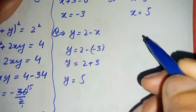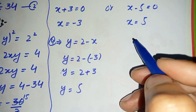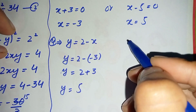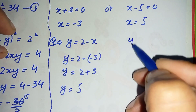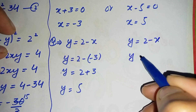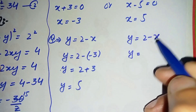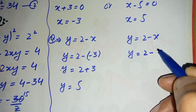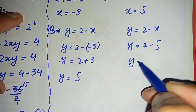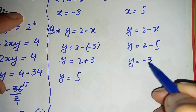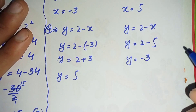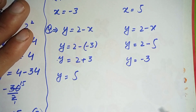Since minus times minus is plus, y becomes 2 plus 3, which is 5. Now for the second value: y is equal to 2 minus x, and substituting x is equal to 5, we get y is equal to 2 minus 5, which is minus 3.